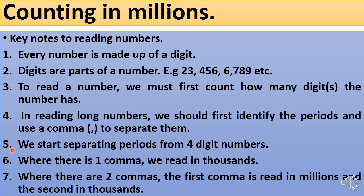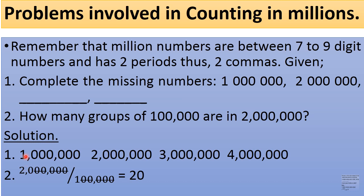Where there is one comma, we read in thousands. Where there are two commas, we read in millions. Remember that million numbers have between 7 to 9 digits and have two periods — that is, two commas.